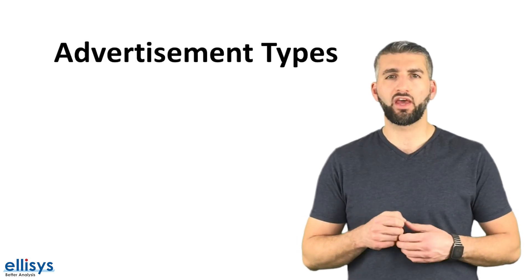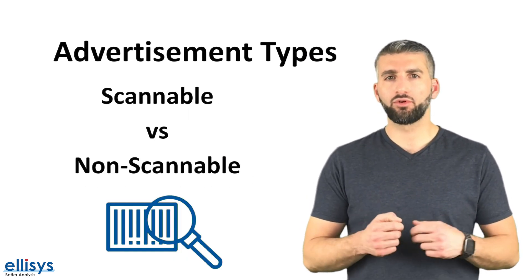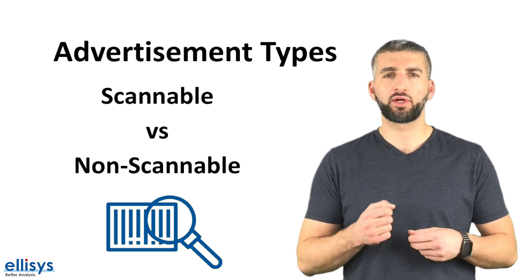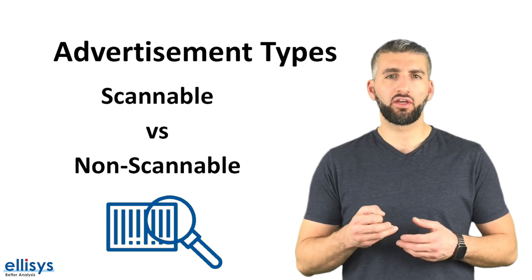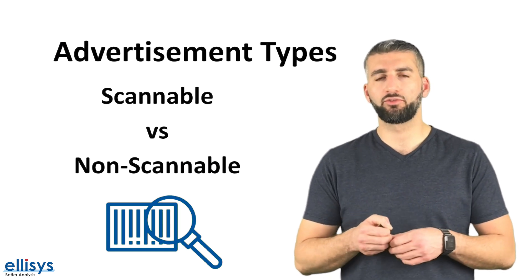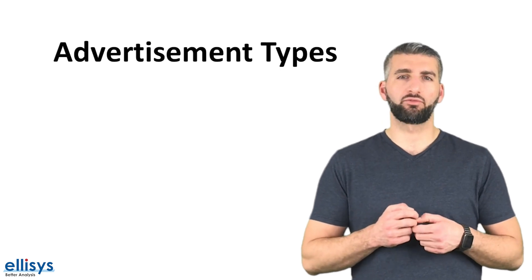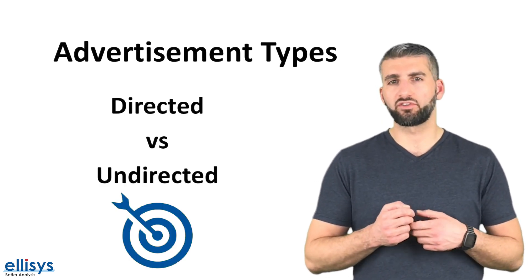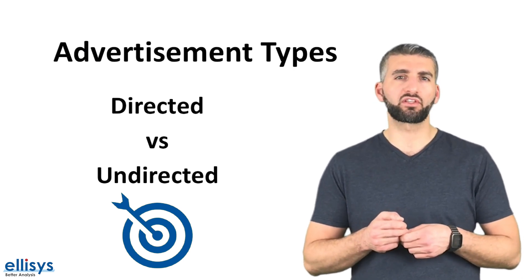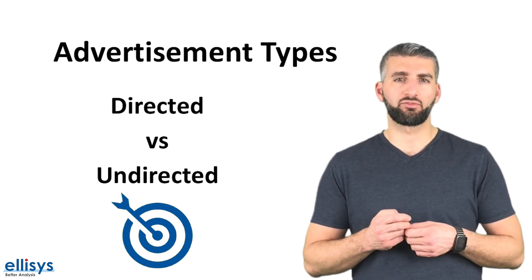Advertisement packets have different types. They can be either connectable or non-connectable, scannable or non-scannable. Scannable means that a device can send a request for additional data from the advertiser in what's called a scan request, and that advertiser responds with a scan response which includes the additional advertisement data. Other types include being directed versus undirected. Directed means that an advertising device can target a specific device it wants to connect to or send its advertisement data to.